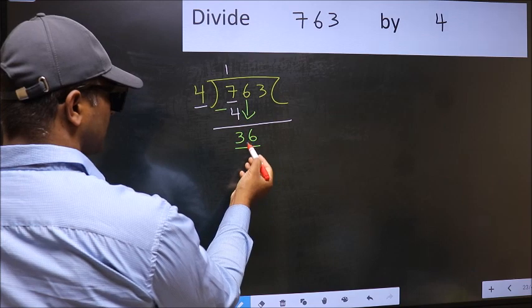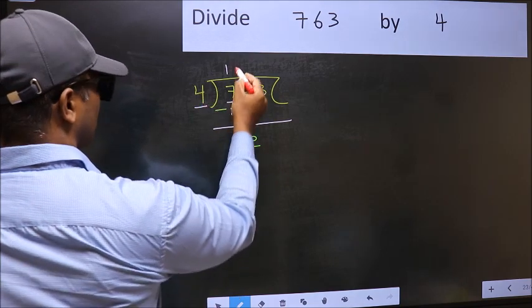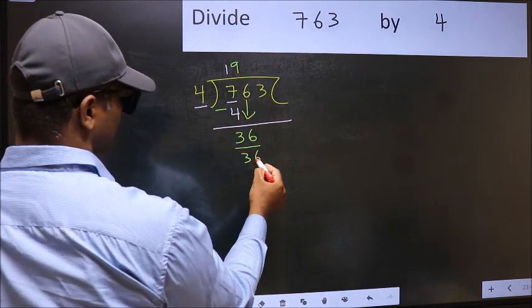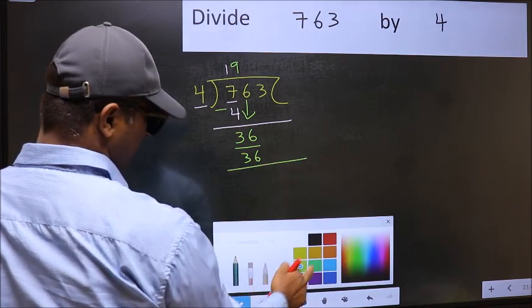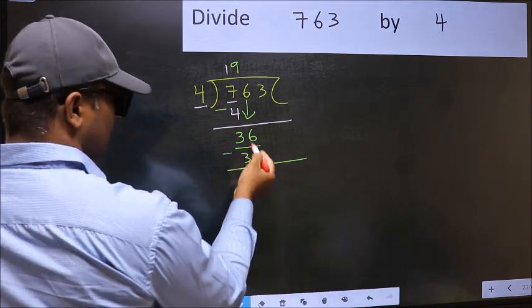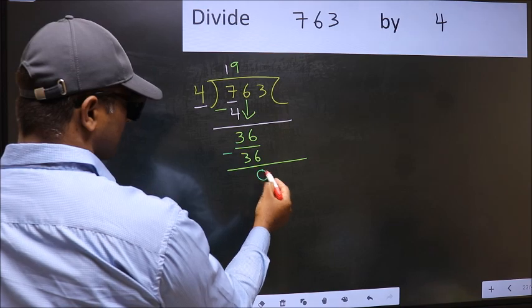Now 36, when do we get 36 in 4 table? 4 nines, 36. Now you should subtract. 36 minus 36, 0.